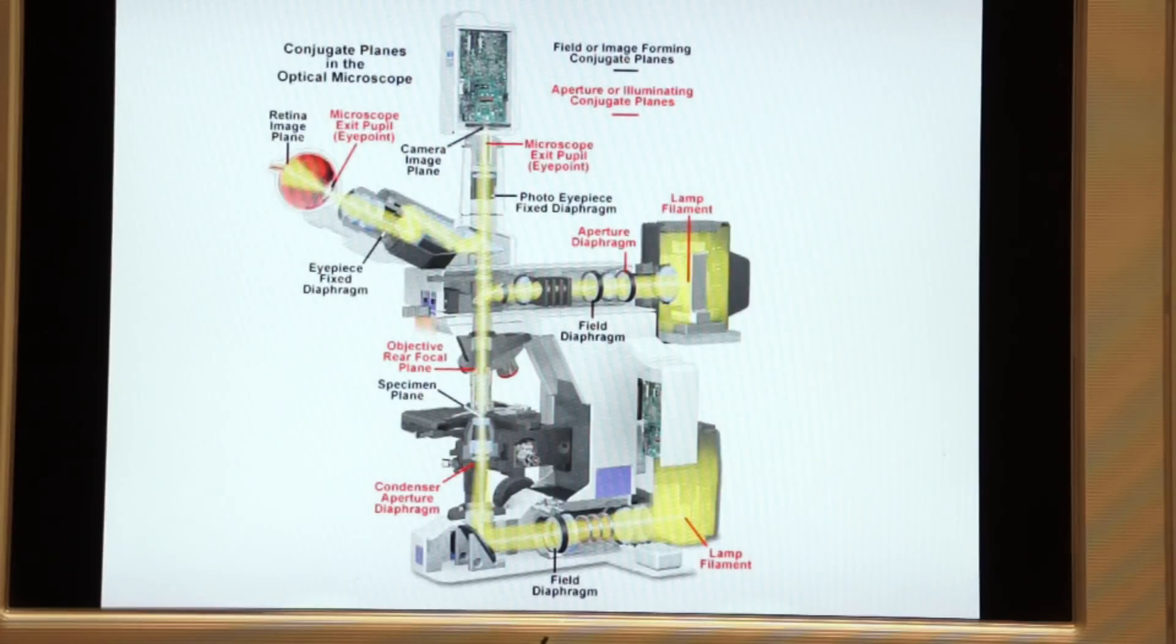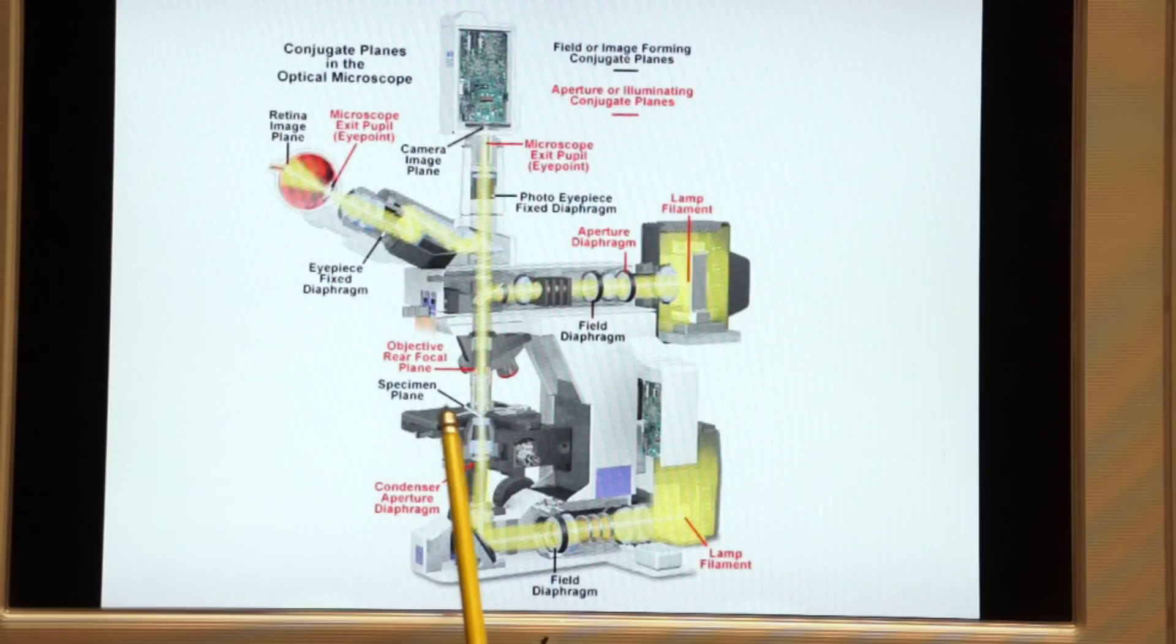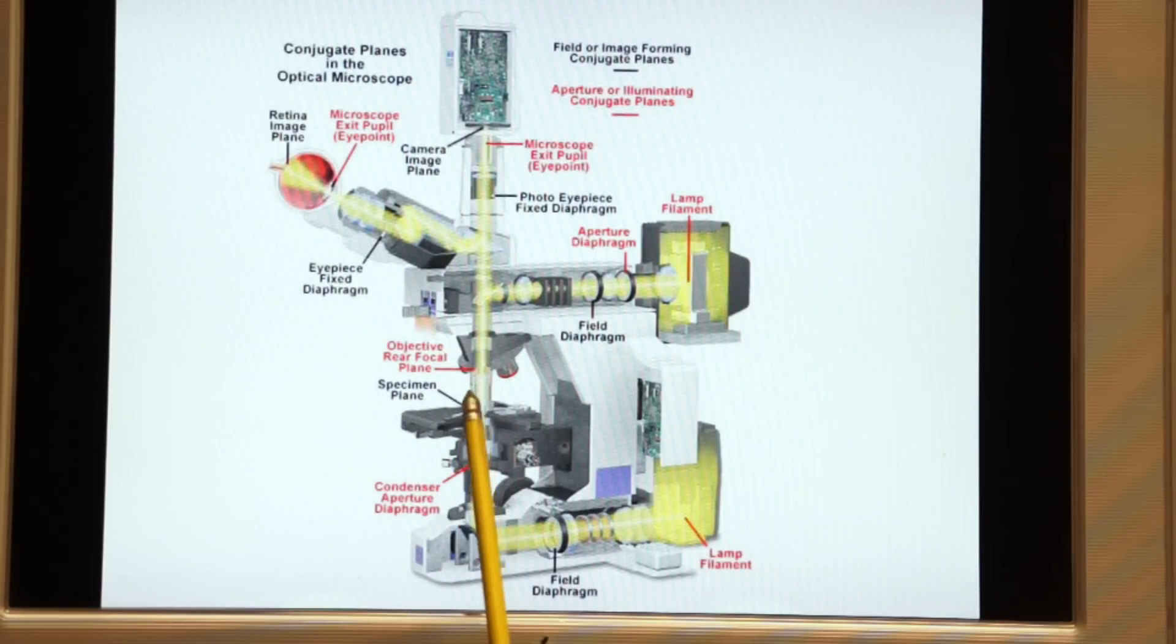Remember the condenser is an optical device that condenses the light into a small cone of light so that it can travel through the specimen which is here on your XY stage and into the objective.